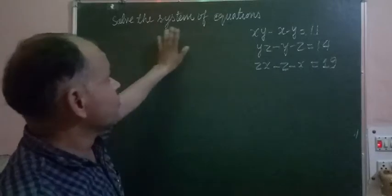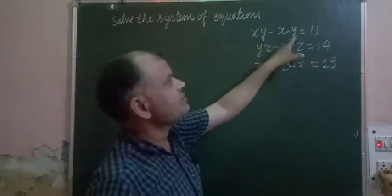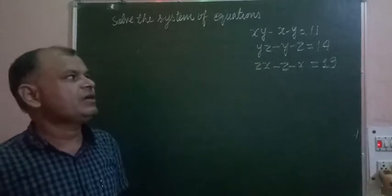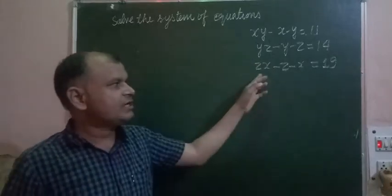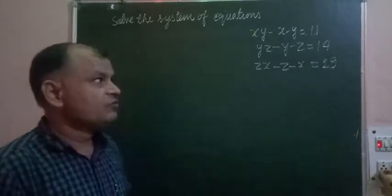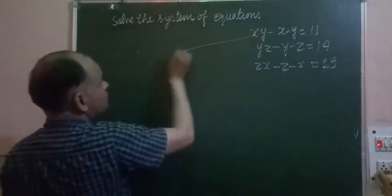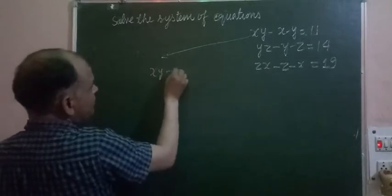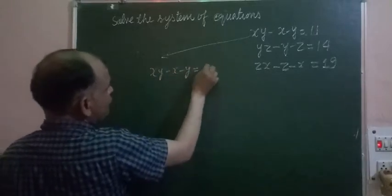It is given: solve the system of equations xy - x - y = 11, yz - y - z = 14, and zx - z - x = 19. In this type of question, first we work with xy - x - y = 11.